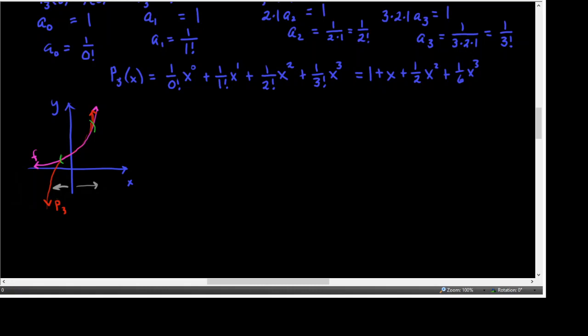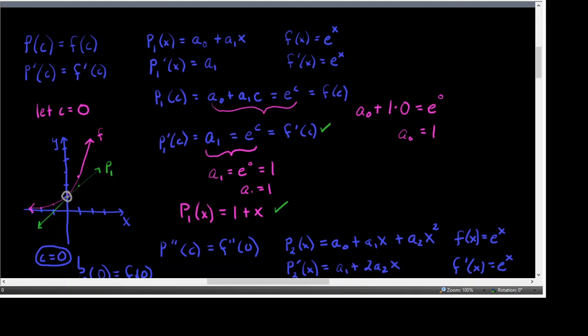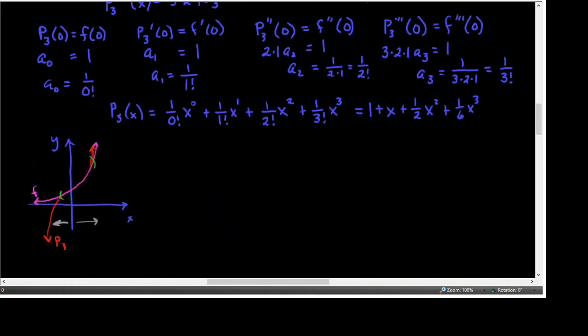With P sub 3, if you hit trace and move over to about where X is 1, the function is 2.718. If you toggle down to Y sub 4, it's 2.666 — that's pretty close. Even one away from our center we've got a pretty close approximation. It's not perfect and we don't expect it to be perfect, but it's getting good. If I put 1 into the line, that dot is not very close to the dot on the function. So we are getting a better approximation further out as we add to the powers of our polynomial.